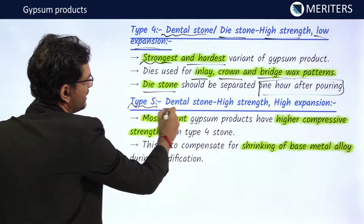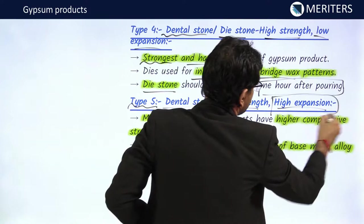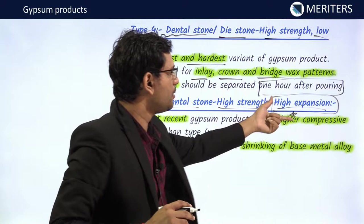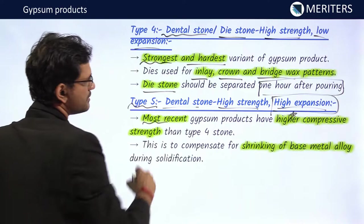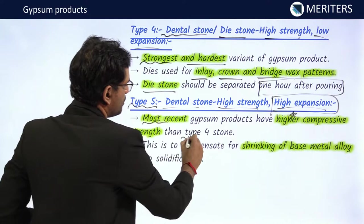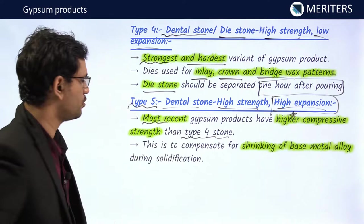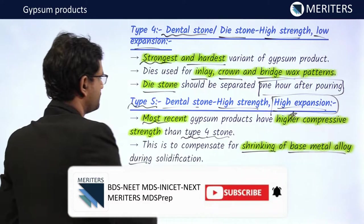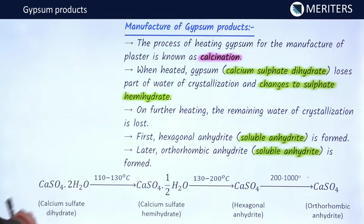Type 5 is dental stone with high strength and high expansion. The benefit of high expansion is that it compensates for the shrinkage of base metal alloys. This is the most recent gypsum product, and it is considered to have even better compressive strength than type 4 stone.